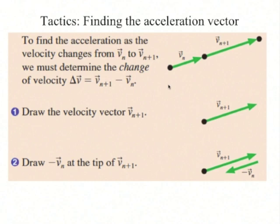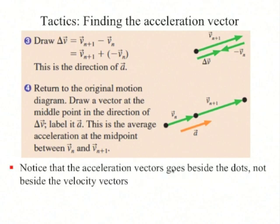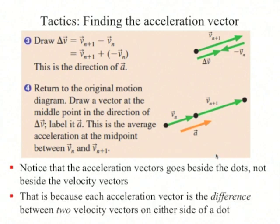To find the acceleration as the velocity changes from v_n to v_(n+1), first draw v_(n+1), then draw negative v_n to subtract v_n from v_(n+1). Delta v is this difference of two vectors, and delta v gives the direction of acceleration a. If you want to draw the acceleration vector back in the original motion diagram, draw a vector at the middle point in the direction of delta v and label it a. Notice that the acceleration vector goes beside the dots, not beside the velocity vectors, because each acceleration vector is the difference between two velocity vectors on either side of a dot.